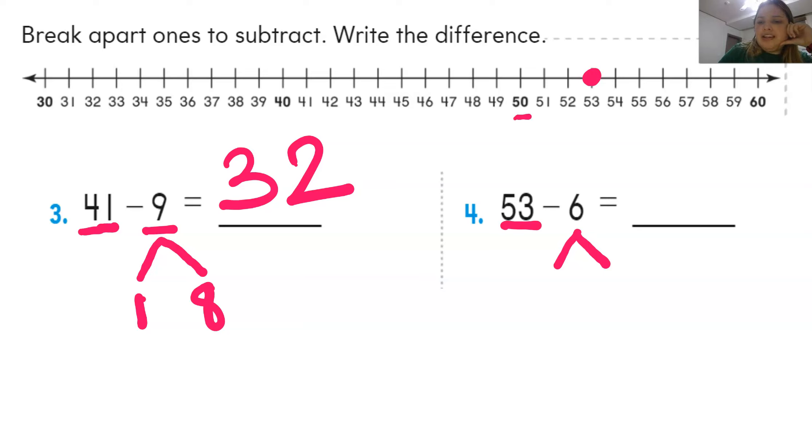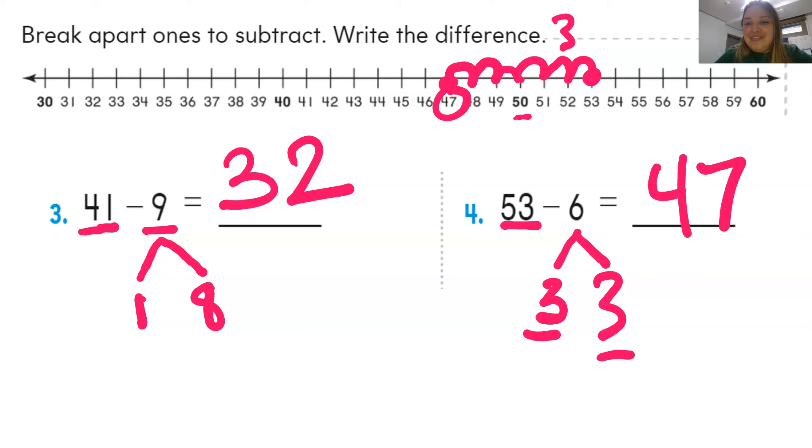Well, it takes 1, 2, 3. So one of my addends for the 6 to break apart that 6 is 3. 3 plus what number is equal 6? 3 plus 3. So that means that I have to go back 3 more because I already went back these 3. Now I'm going to go back 3 more. 1, 2, and 3. So that is 47. So 53 minus 6 equals 47.